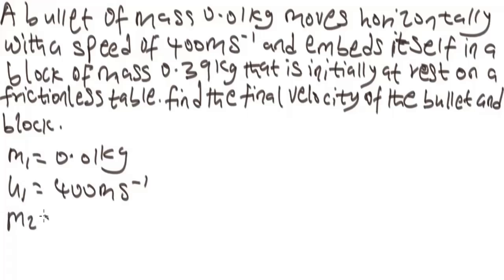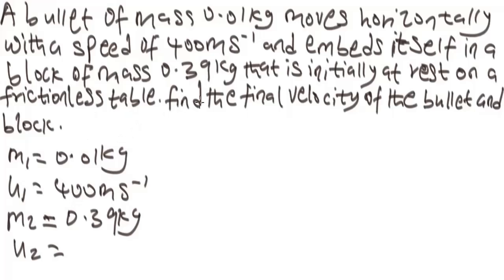We have our M2 to be 0.39 kg. U2 is 0, because the block is initially at rest. So we are looking for V, the final velocity. Since the bullet embeds itself in the block, this is under perfectly inelastic collision.